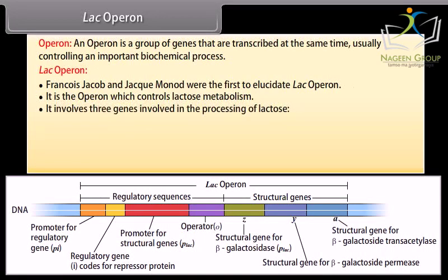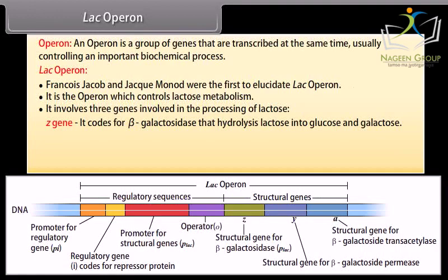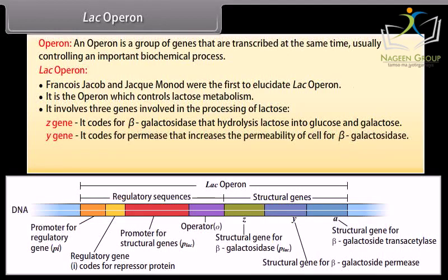The lac operon involves three genes involved in the processing of lactose. The Z gene codes for beta-galactosidase, which hydrolyzes lactose into glucose and galactose. The Y gene codes for permease, which increases the permeability of the cell for beta-galactosidase. The A gene codes for transacetylase.